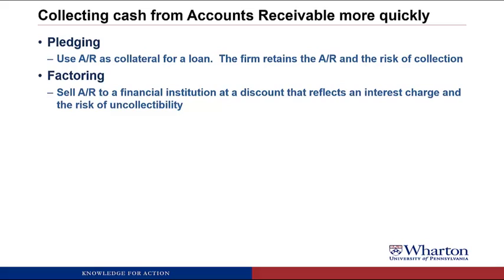There's another way that reduces this risk called factoring. Under factoring, the company sells the accounts receivable to a bank at a discount, reflecting both an interest charge and the risk of uncollectability. If you had a million dollars in accounts receivable that you'd have to wait 30 to 90 days to collect, you could instead sell them to a bank for, say, $950,000 — you get your cash right away and don't have to worry about collecting. The bank pays $950,000 instead of a million partly because of an implicit interest charge and partly because it's taking on the risk of uncollectability. The longer the term of the receivables, the bigger the discount.